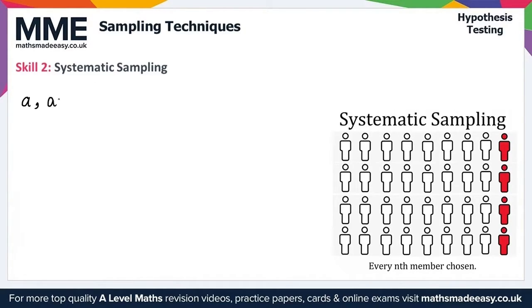We continue A plus N, A plus 2N, and so on, choosing N such that we get the sample size required.